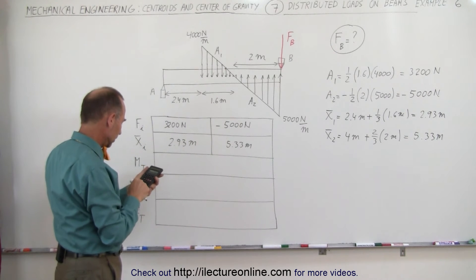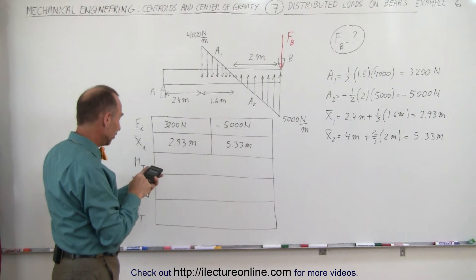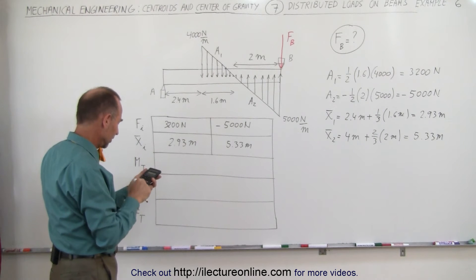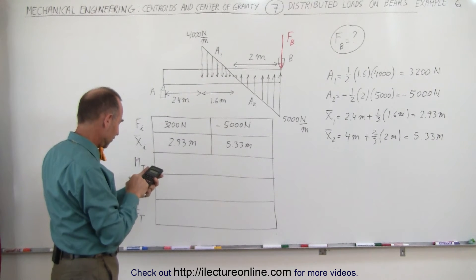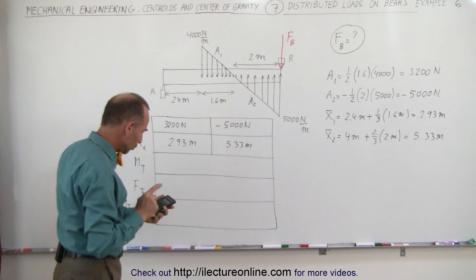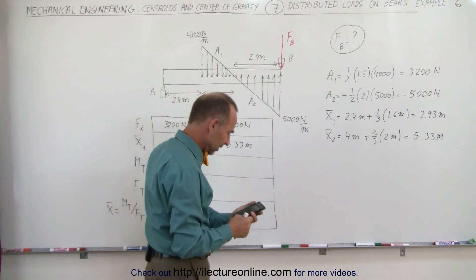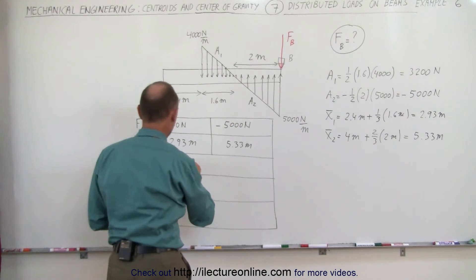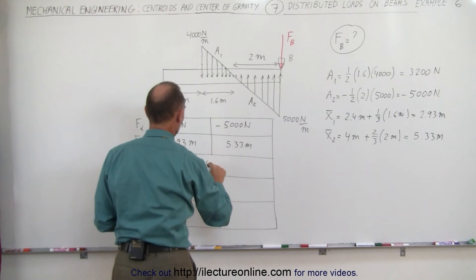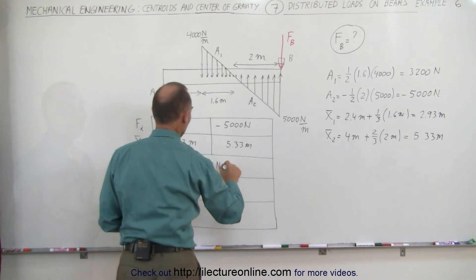Multiplying these numbers together: 3,200 times 2.93 minus 5,000 times 5.333333 equals, and we get a total of minus 17,280 newton meters.